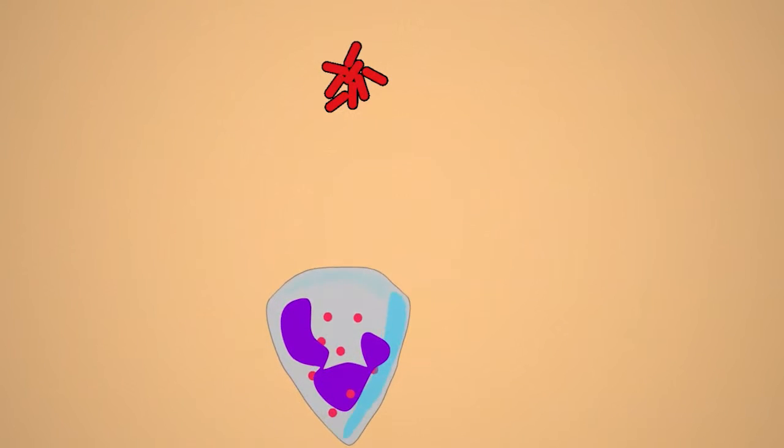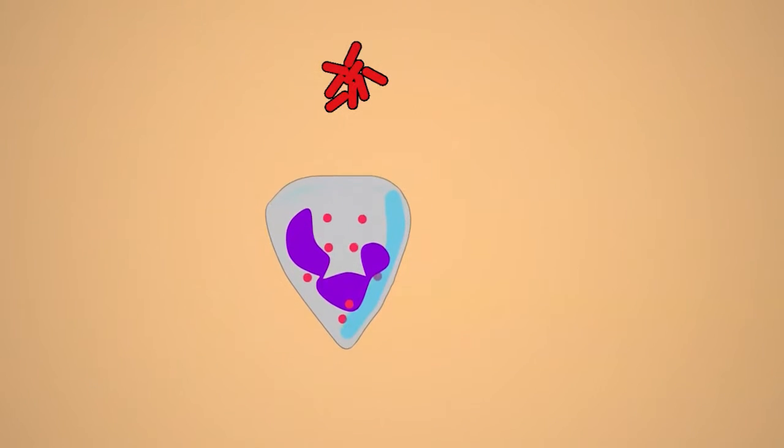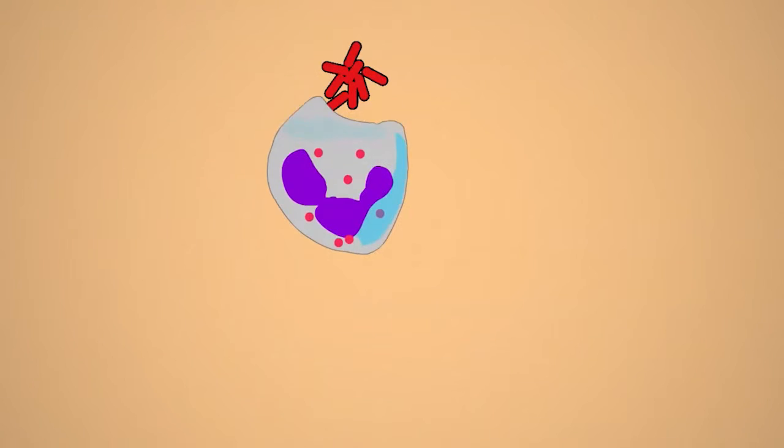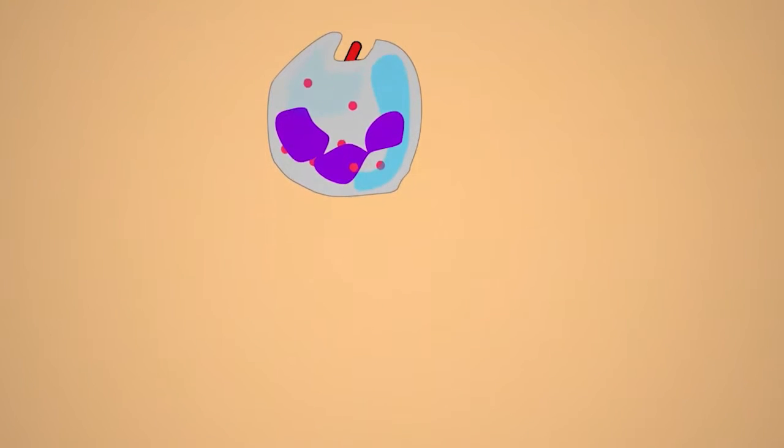Neutrophil granulocytes are important players in the cellular immune system and they are first in line to detect and destroy bacteria by a process called phagocytosis.